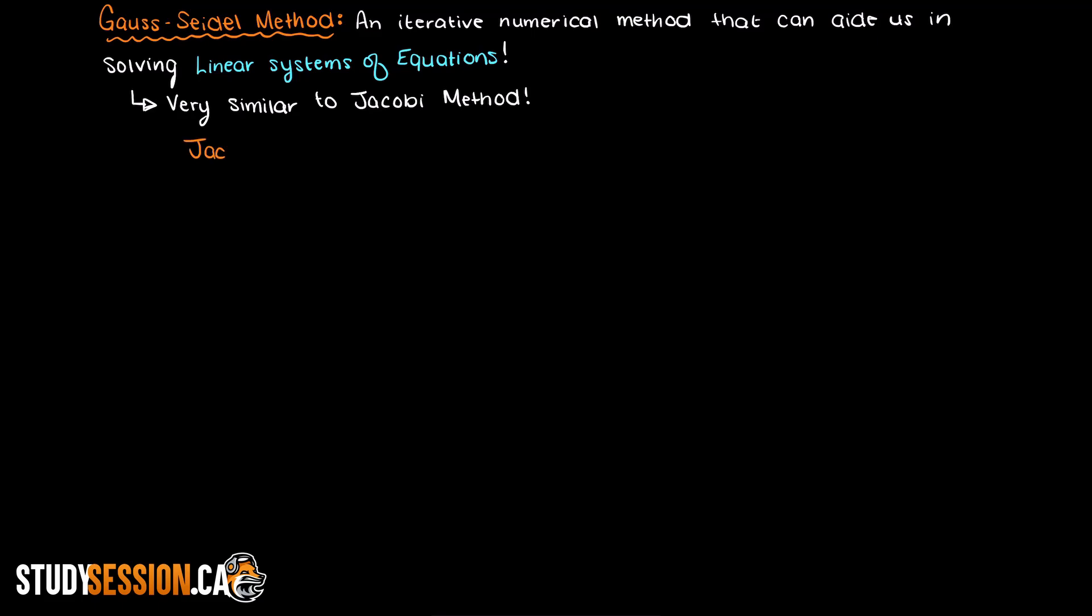The Gauss-Seidel method is an iterative numerical method that can aid us in solving linear systems of equations. If you have seen our previous videos on Jacobi method, also known as Jacobi iteration, then learning the Gauss-Seidel method will be very easy for you.